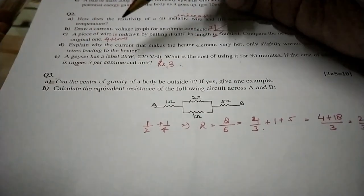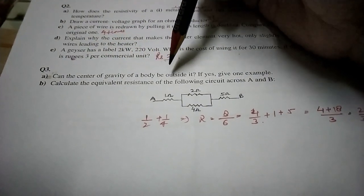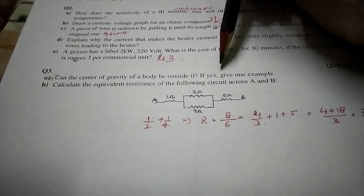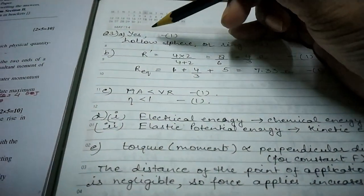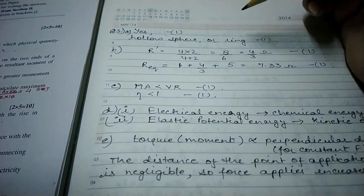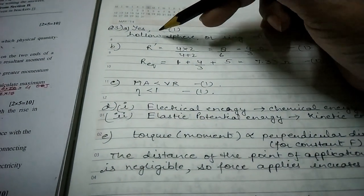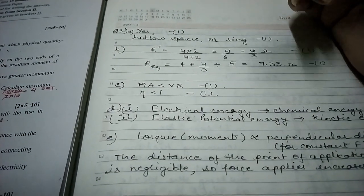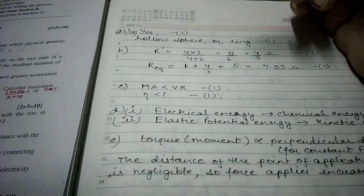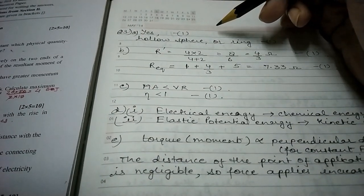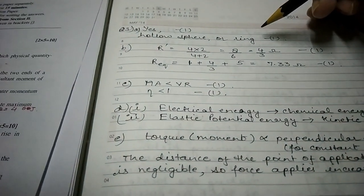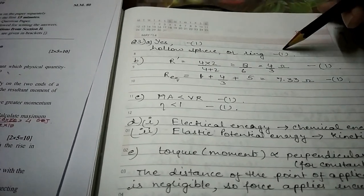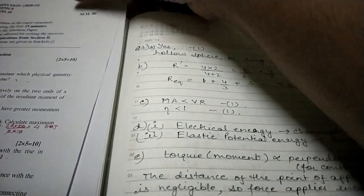Question 3a: can the centre of gravity of a body be outside it? If yes, give one example. The answer is yes — the centre of gravity can lie outside the body. Examples include a hollow sphere, hollow cone, or hollow cylinder — any one of these is correct. The marks distribution is 1 plus 1.